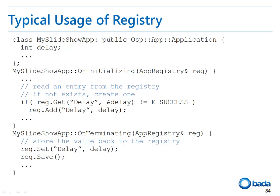Now let's have a look at how to actually use the registry through the example code. First, we need to read the registry. When the onInitializing function is called in the application, the registry is delivered as a parameter. We can read the value of a key from the application registry by calling the get function with the required parameters. In the sample code, you can see the procedures to create a key if the corresponding key does not already exist. If the value has been changed while the application is running, we have to save the value to the registry in the onTerminating function by calling the set function, then save the registry using the save function.